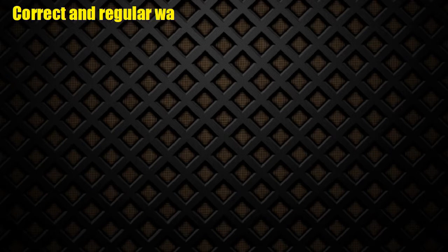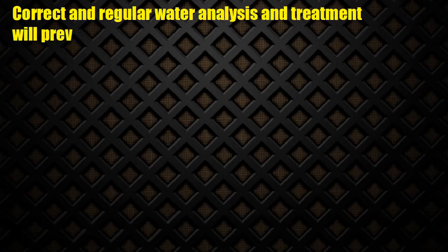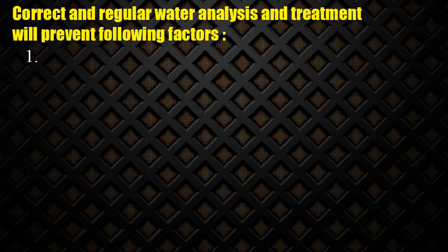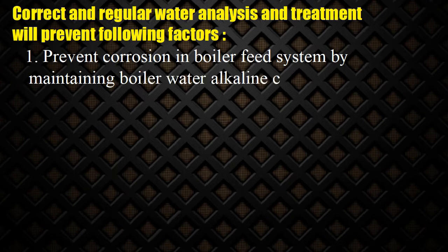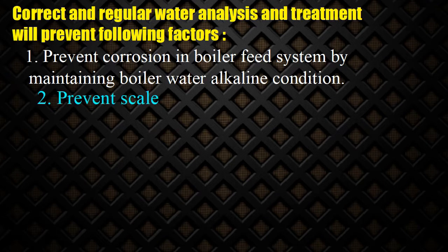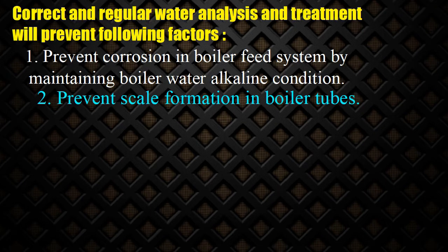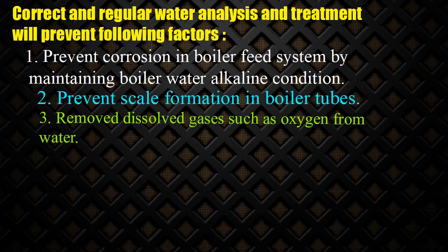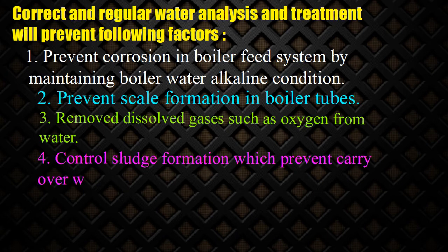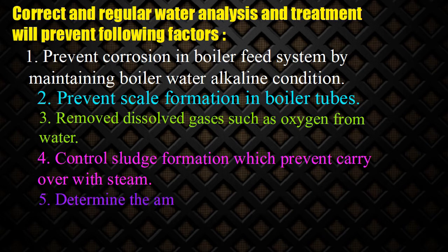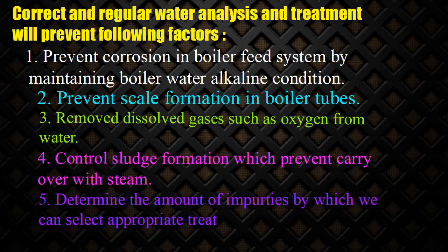Correct and regular water analysis and treatment will prevent the following factors: (1) Prevent corrosion in boiler feed system by maintaining boiler water alkaline condition. (2) Prevent scale formation in boiler tubes. (3) Remove dissolved gases such as oxygen from water. (4) Control sludge formation which prevents carry over with steam. (5) Determine the amount of impurities by which we can select appropriate treatment.